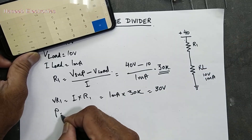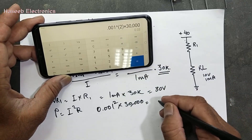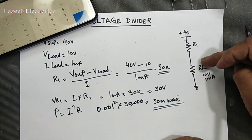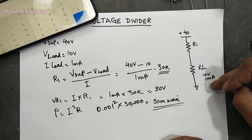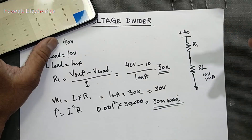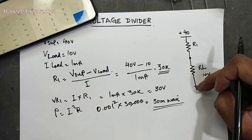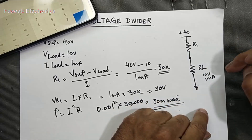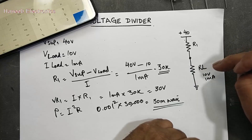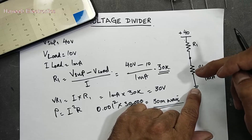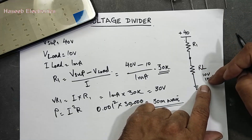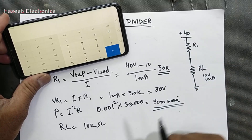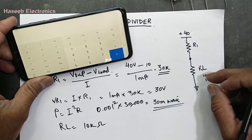We also calculate the power rating: Power = I² × R = (0.001)² × 30,000 = 30 milliwatt. This is a good condition when RL is working normally — it drops 10 volts and draws 1 milliampere. However, some circuits are sensitive. For example, if a circuit can operate up to a maximum of 15 volts, when it is working, if some fault occurs, its internal resistance can go high.